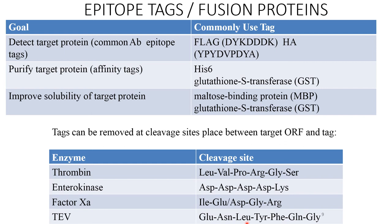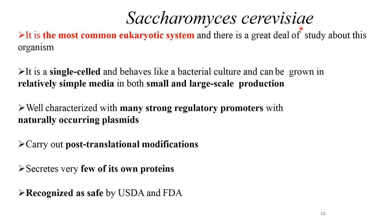Saccharomyces cerevisiae is the most common eukaryotic expression system. There is a great deal of study about this organism — it is single-celled and behaves like bacteria. Cultures can be grown in relatively simple media in both small and large scale production. It is well-characterized with many strong regulatory promoters, naturally occurring plasmids, and carries out post-translational modification. It secretes very few of its own proteins and is recognized as safe by the USDA and FDA.